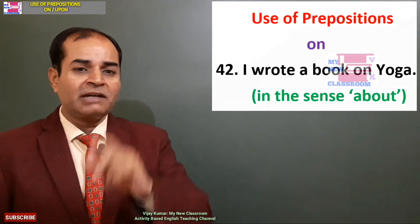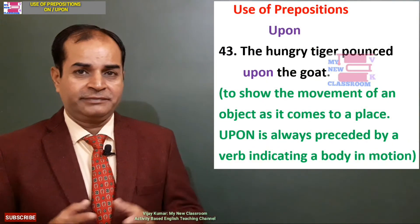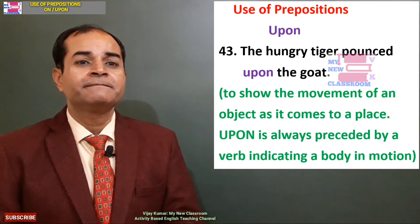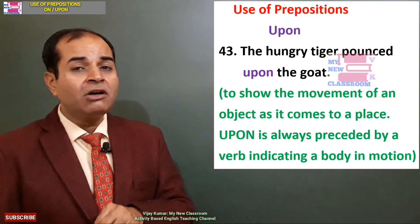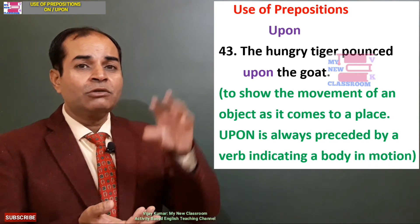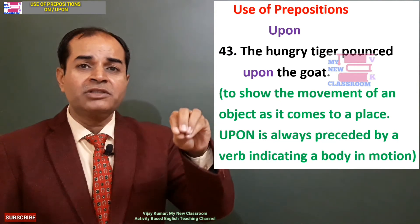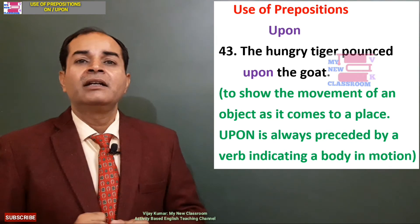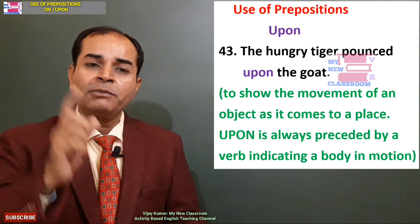Now I will tell you what causes confusion. The hungry tiger pounced upon the goat — the tiger leaped upon the goat. Here 'on' will not be used; 'upon' will be used. Why? Because to show the movement of an object as it comes to a place, 'upon' is always preceded by a verb. Here 'pounced' is used with 'upon', indicating a body in action. If the verb indicates a body in motion, then 'upon' is used.